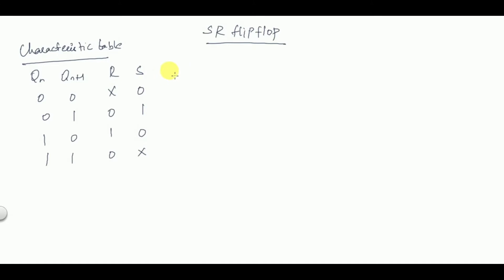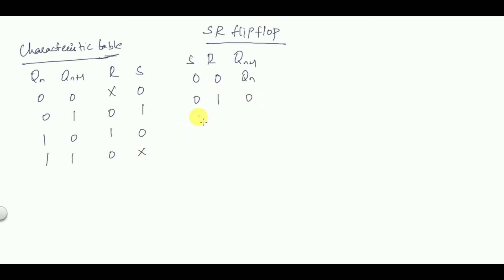Remembering too many points is not good for competitive exams because you have to remember many things at once. You can remember this using the truth table, which is easier. From the truth table: S=0, R=0 gives QN+1=QN (no change); S=0, R=1 means reset so output=0; S=1, R=0 means set so output=1; S=1, R=1 is a don't care condition.